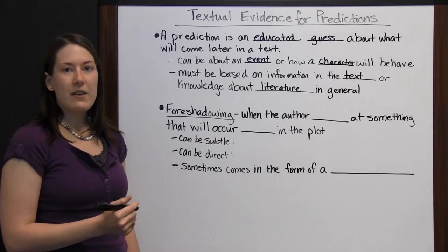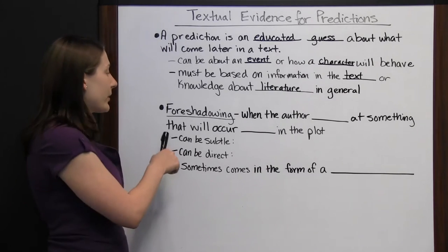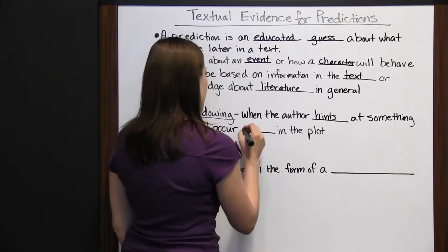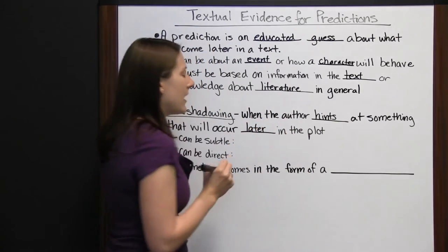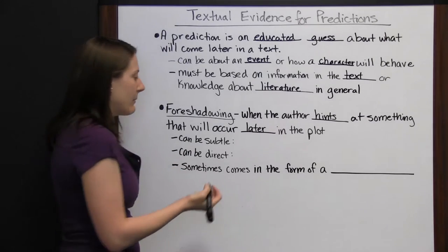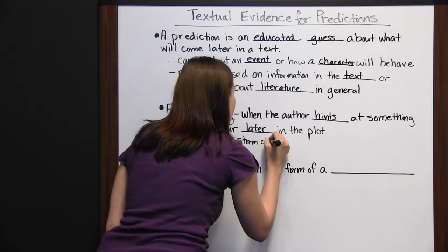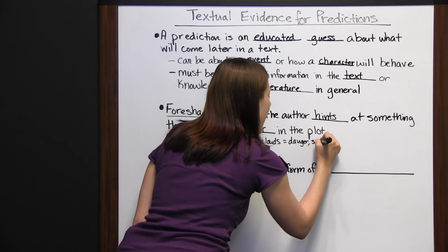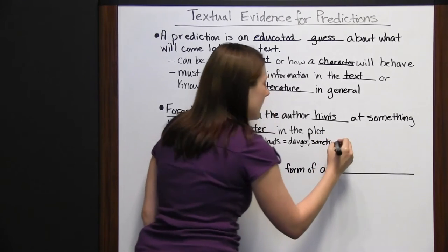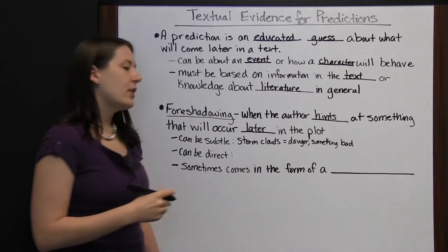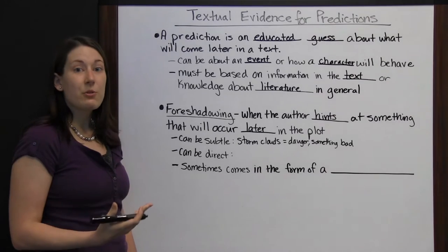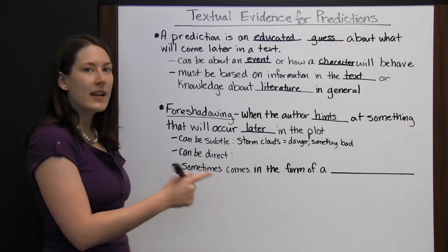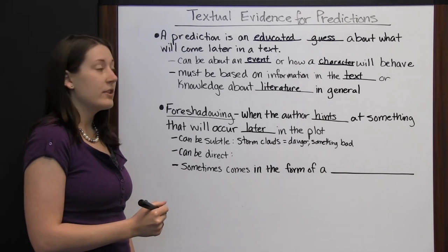One specific way that you might find textual support for a prediction is with foreshadowing. Foreshadowing is when the author hints at something that will occur later in the plot. Sometimes it's subtle — the author doesn't say exactly what will happen. It may mention storm clouds on the horizon, and the storm clouds could equal danger or something bad happening. If a character is going through a tough time and then they see storm clouds on the horizon, that may be the author's way of hinting that something bad is coming or danger is approaching.